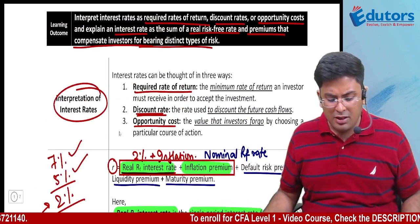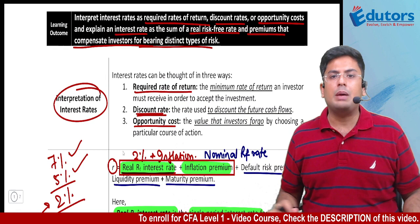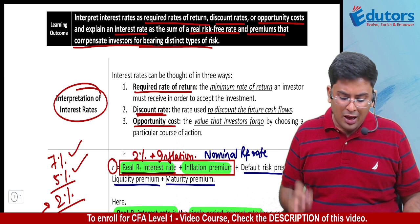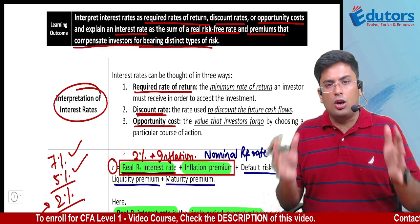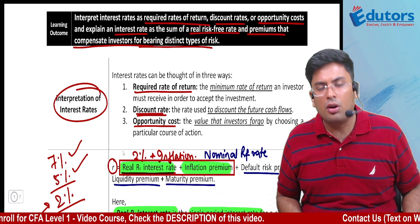So to wrap up this learning outcome: in the first half we learned about three different versions of interest rate — required rate of return, discount rate, and opportunity cost. Then we learned the components of interest rate: real risk-free rate, inflation premium, default risk premium, illiquidity premium, and maturity risk premium. That was it for this learning outcome — see you in the next one.